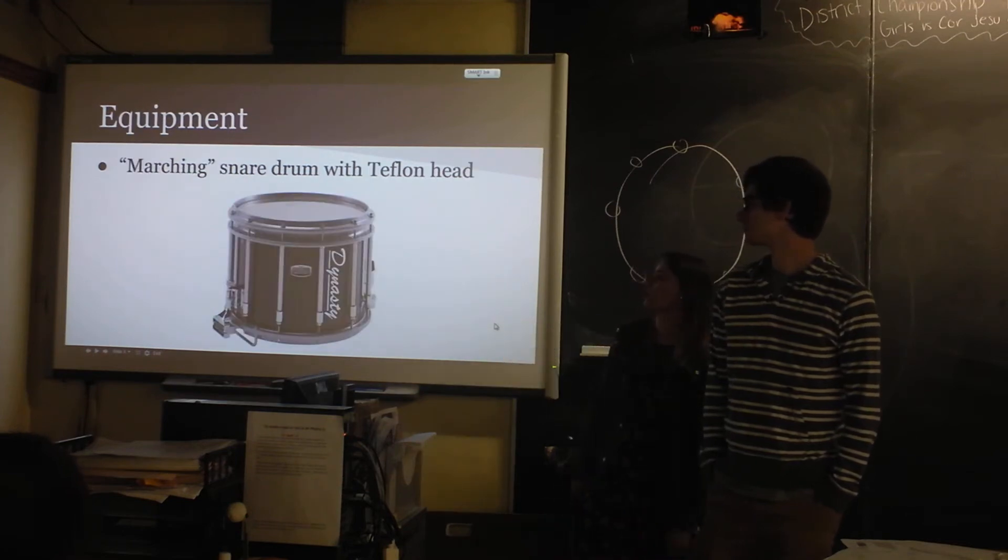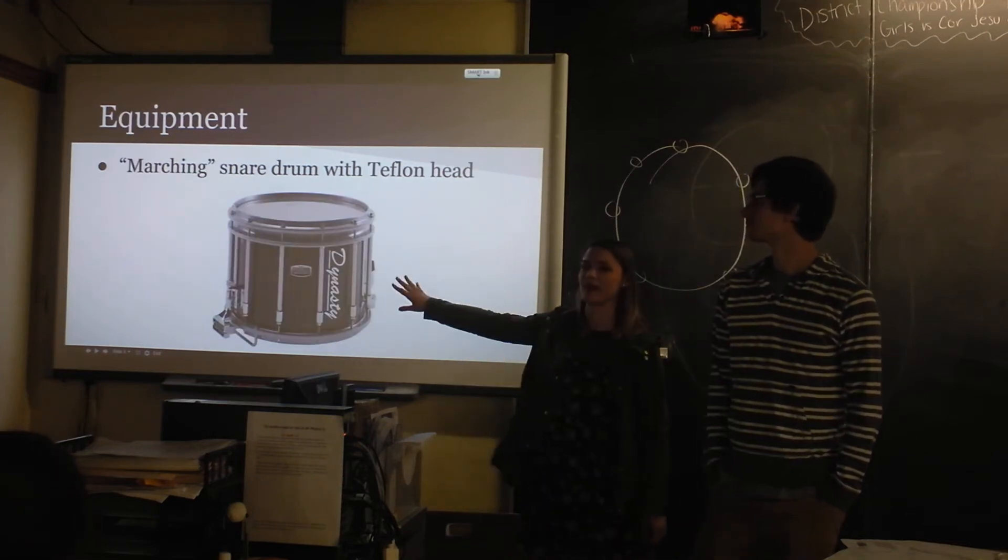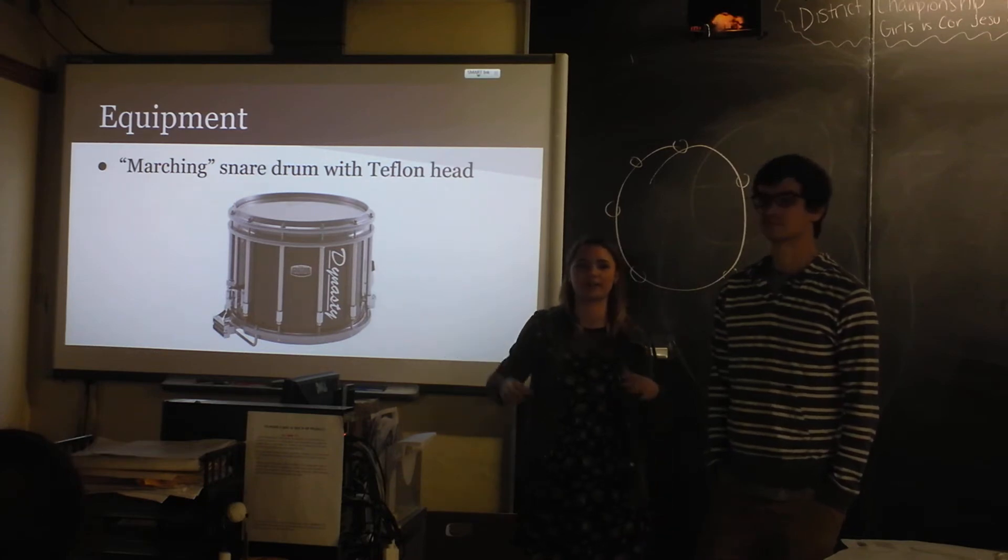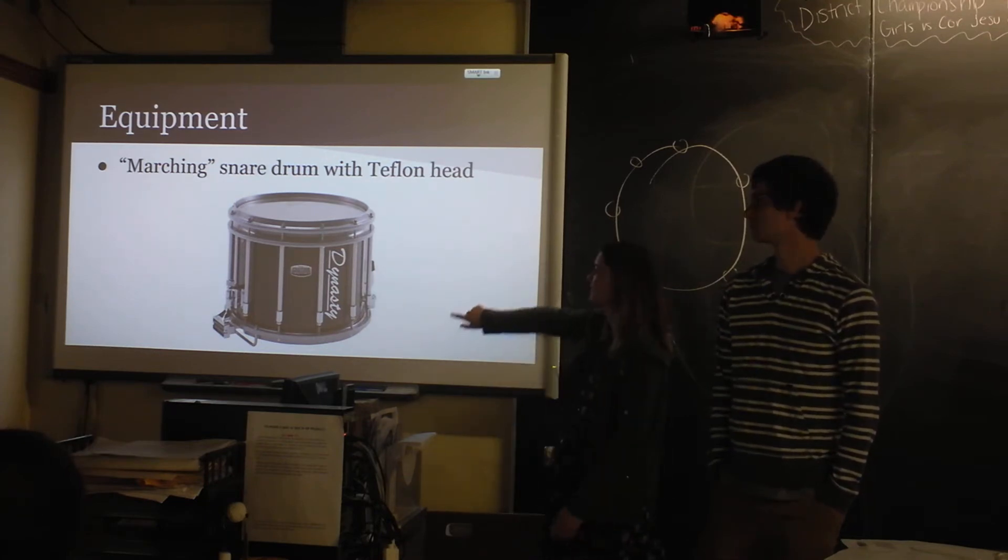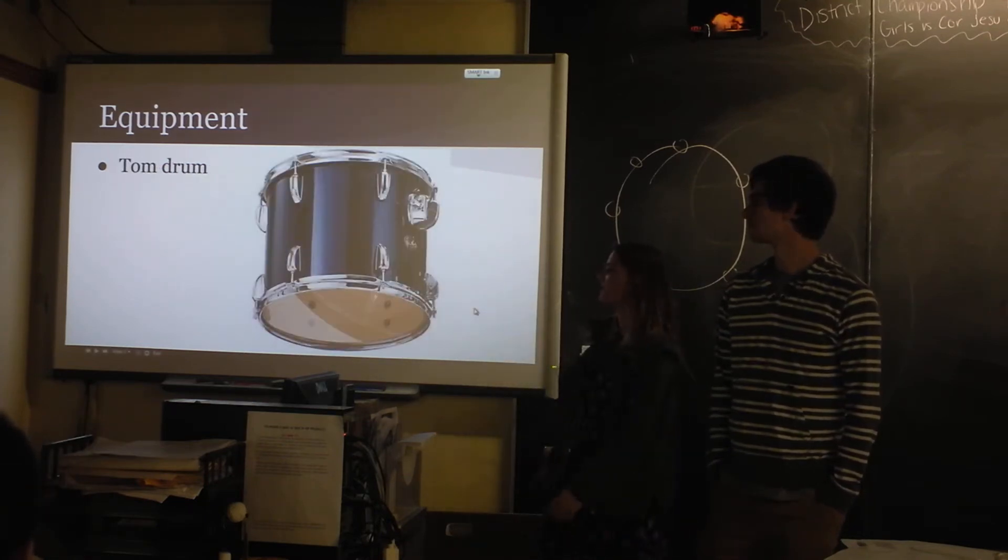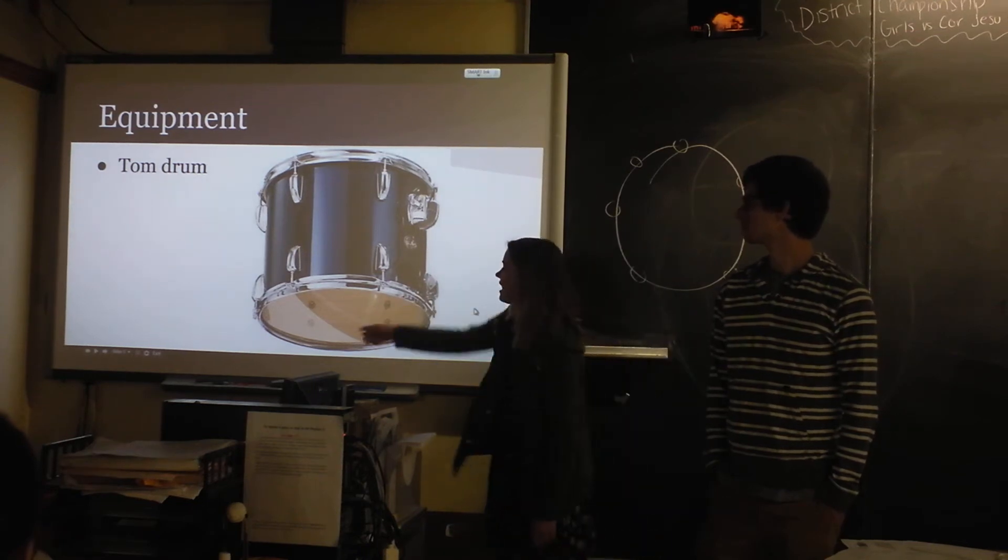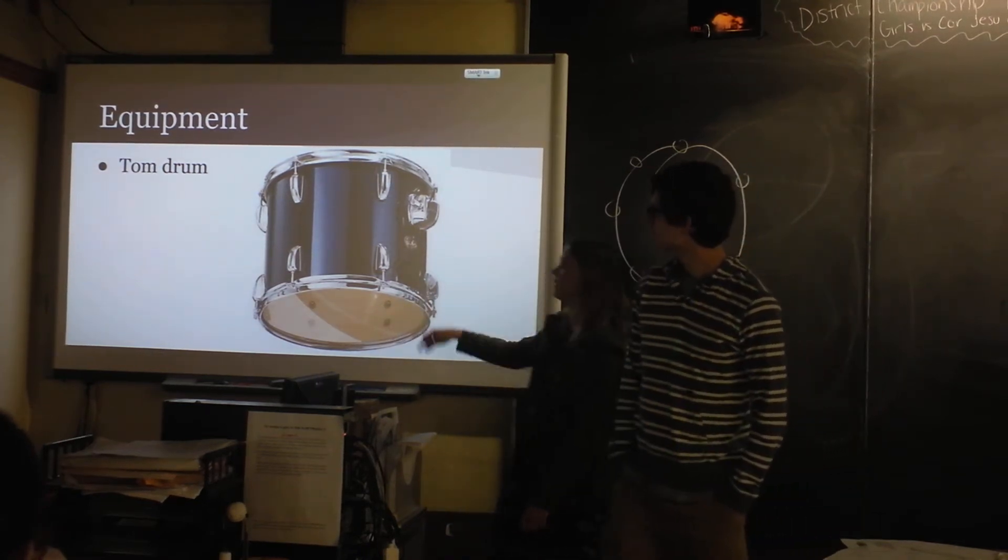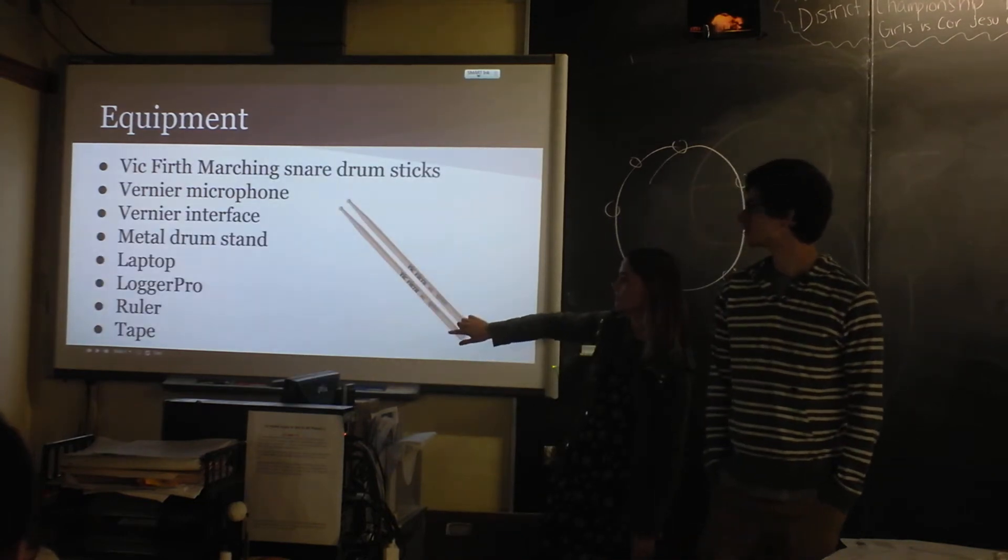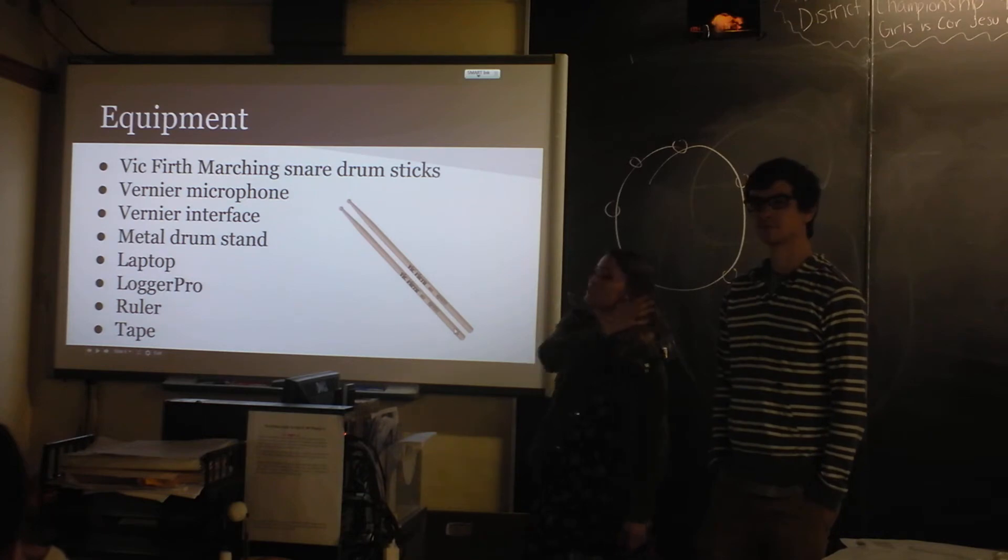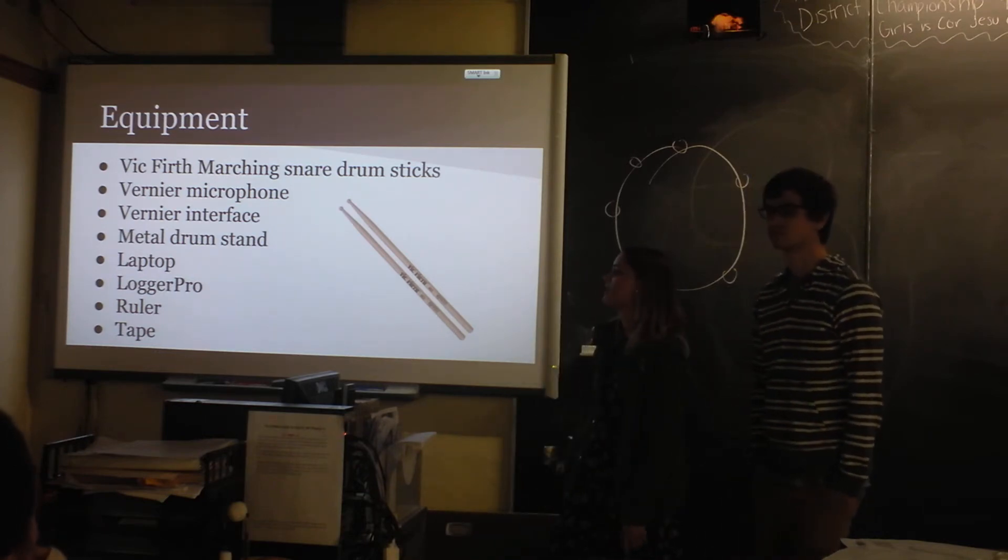So this is what a snare drum looks like, and this is the same model as the one that I used, but I didn't bring it in because it weighs a lot. And then this is the tom, so the bottom has nothing over it, and the top is a plastic head. And then we also used these snare drum sticks, we used a microphone to read the sound waves coming out when we hit it, and then basically just Logger Pro.